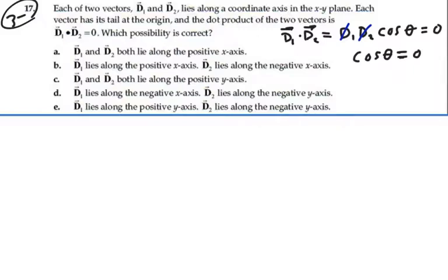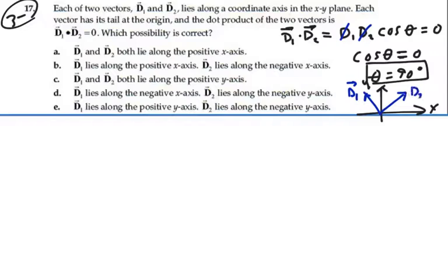For that to happen, theta would have to be equal to 90 degrees. So there would have to be a 90 degree angle between these two vectors. In other words, no matter how they are graphed in the xy plane, if we had these two vectors, say d1 like this, then d2 would have to be perpendicular to it in order for the dot product between the two vectors to be zero. So we're looking for that situation.